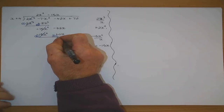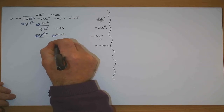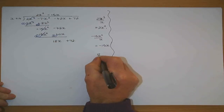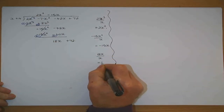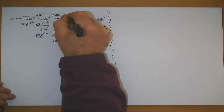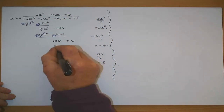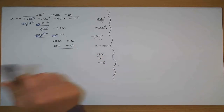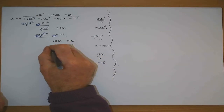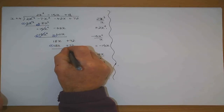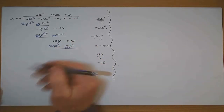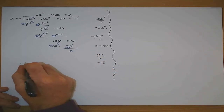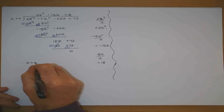Minus 42x plus 60x, and I bring down the 72. I divide x into 18x — 18x divided by x goes in plus 18. 18 by x gives 18x, 18 by plus 4. Change the sign on the lower line — that was a plus, now minus: 18x minus 18x, 72 minus 72. That means no remainder. So x plus 4 is a factor.